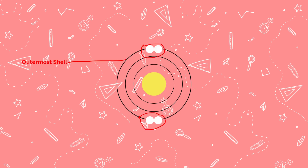Valence electrons. Valence electrons are the electrons in the outermost shell of an atom. They play a crucial role in determining an element's chemical behavior and reactivity. Elements with the same number of valence electrons often exhibit similar properties and form similar types of chemical bonds.